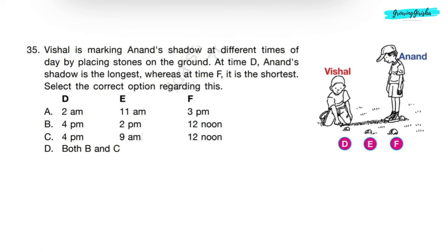Question 35: Vishal is marking Anand's shadow at different times of day by placing stones on the ground. At time D, Anand's shadow is the longest, whereas at time F, it is the shortest. Select the correct option regarding this. Shadows are longest in morning time and evening time, whereas they are shortest at noon. According to given picture, D is 4pm evening, F is 12 noon and E is 2pm. So correct answer will be option B.